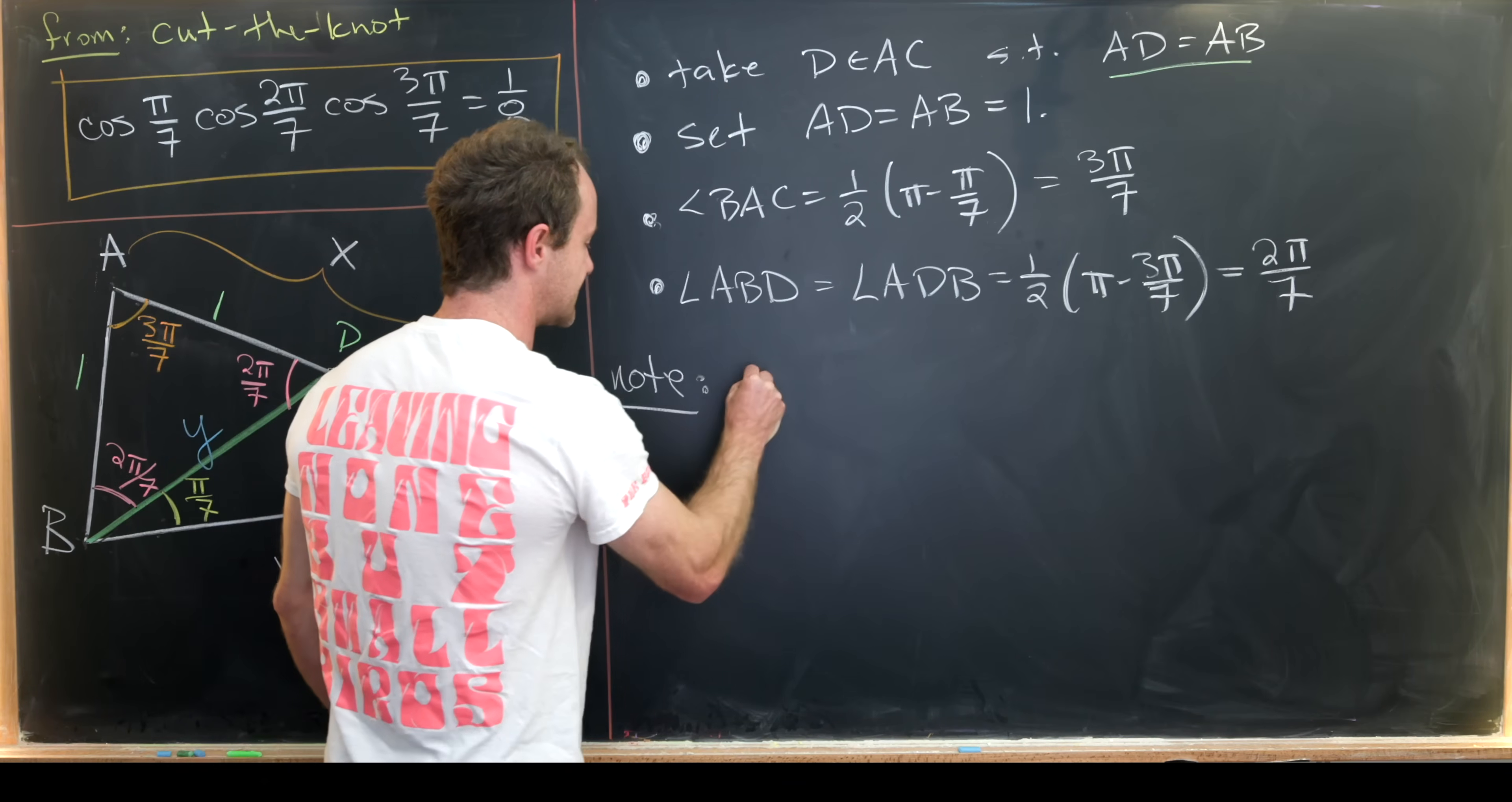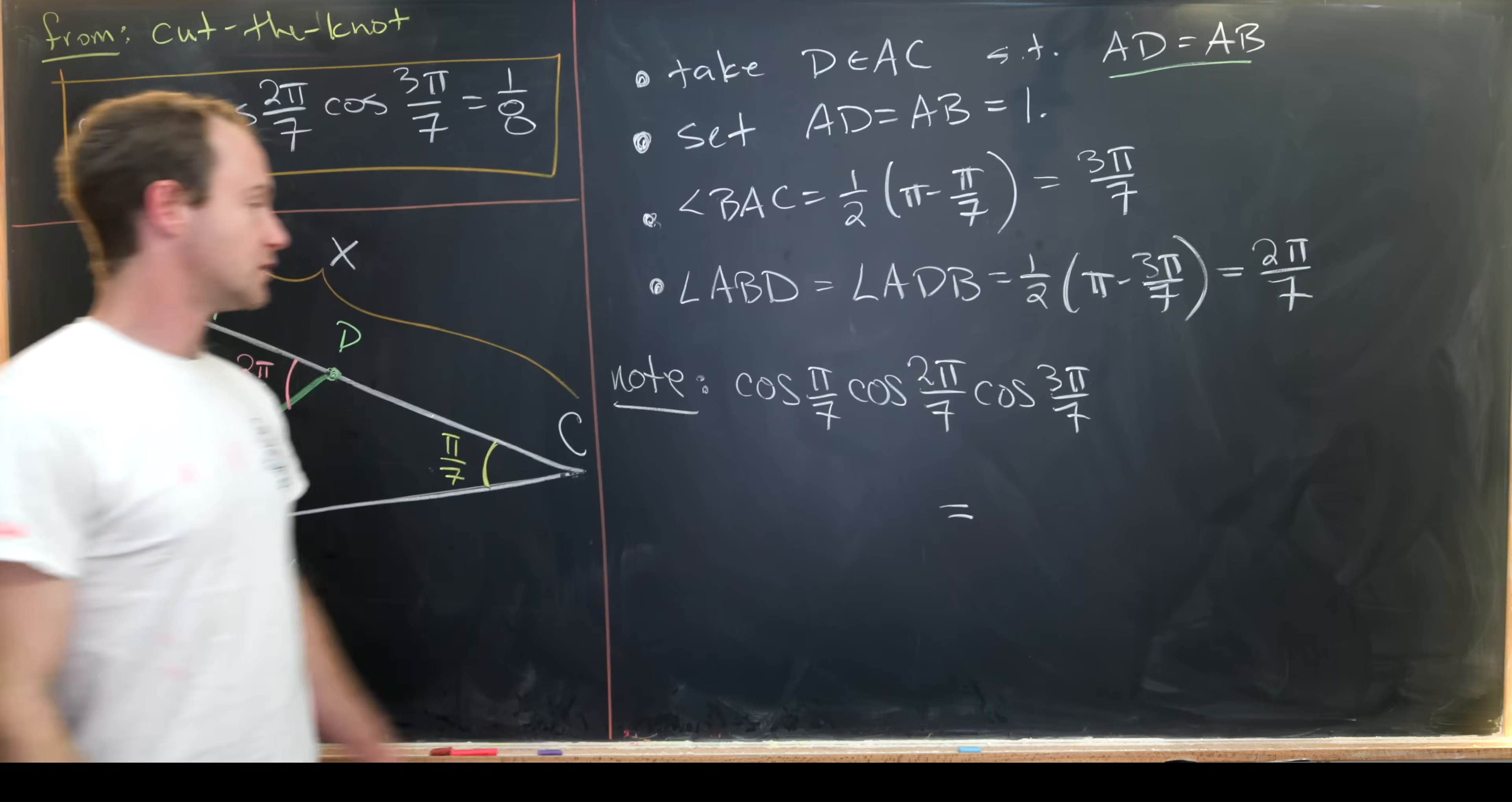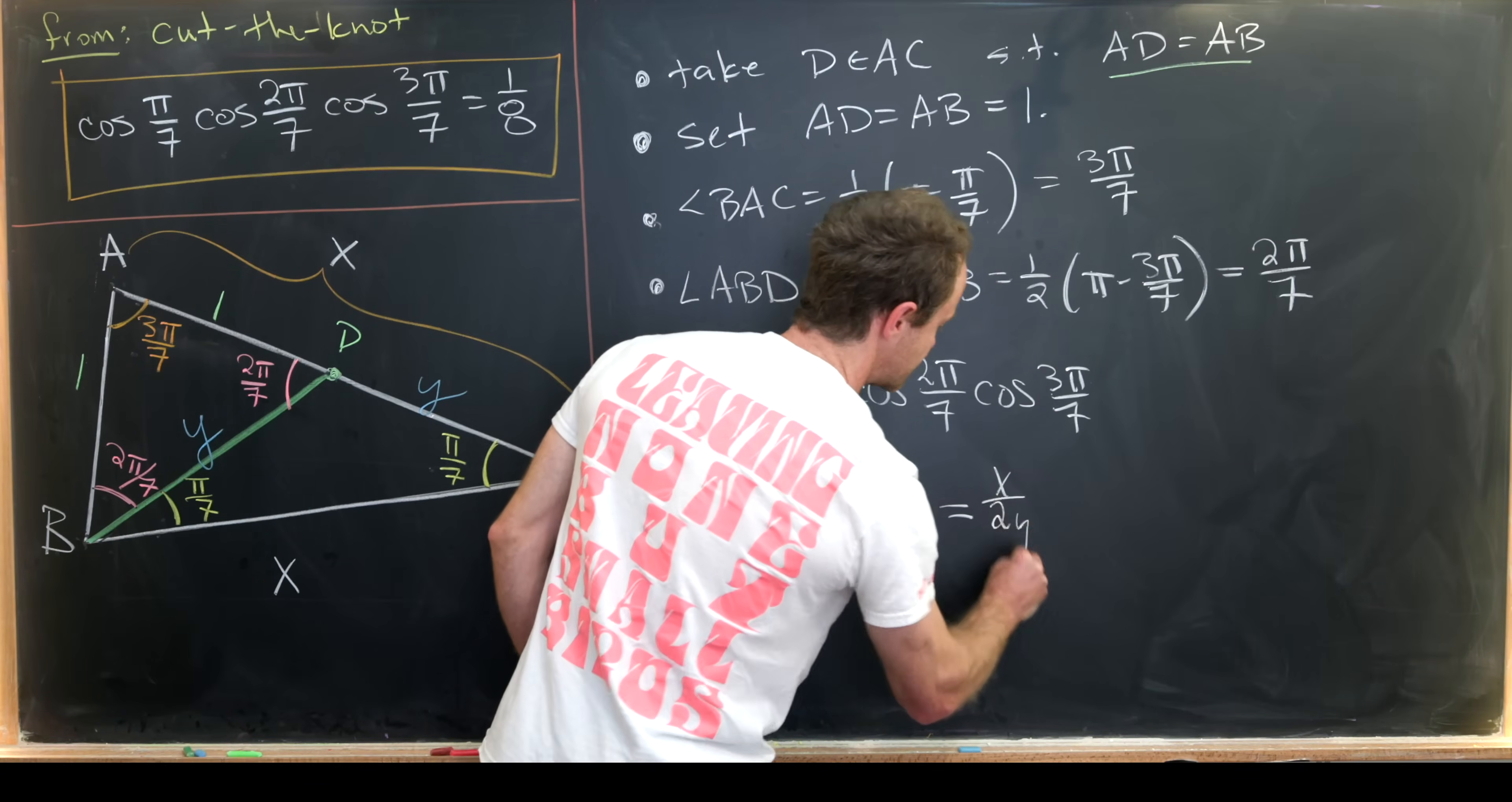So let's notice that the cosine of pi over 7 times the cosine of 2 pi over 7 times the cosine of 3 pi over 7 is equal to, well let's see cosine of pi over 7 in this case. So that'll be x over 2 y based off of our lemma. I guess maybe a heads up that also has length y. So this cosine of pi over 7 is x over 2 y.